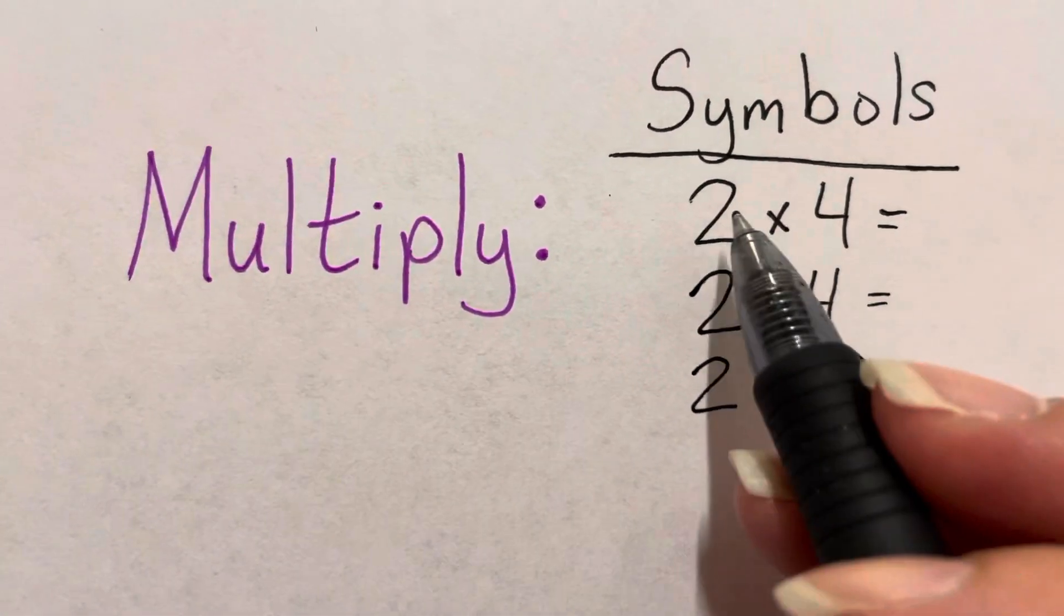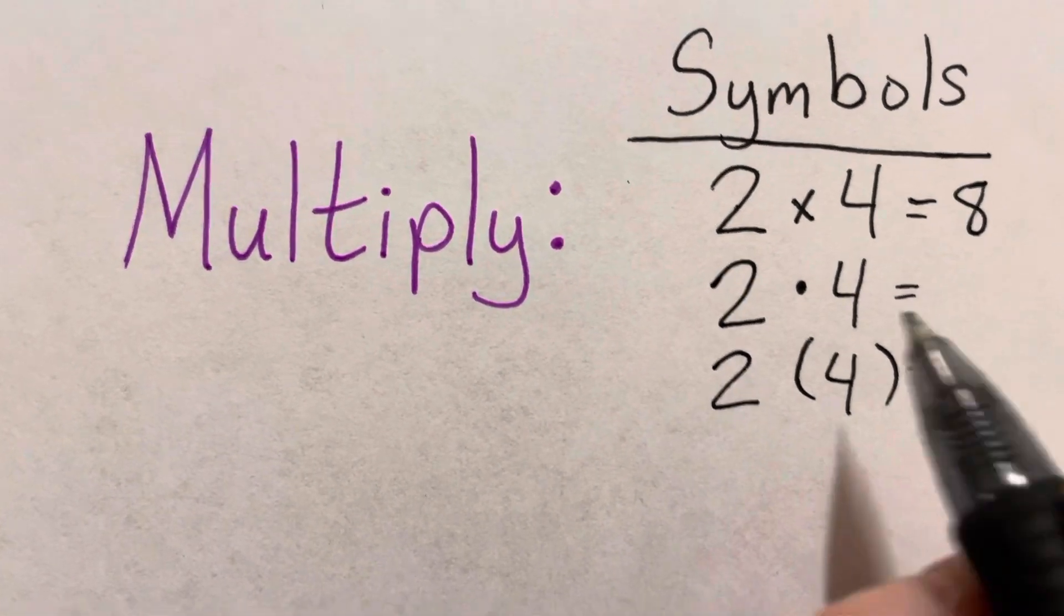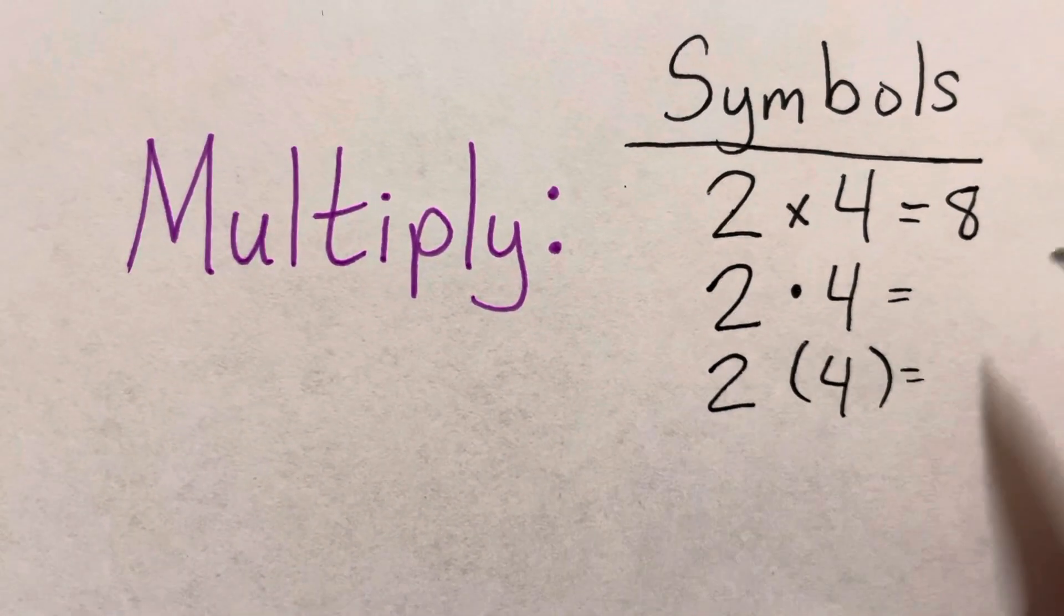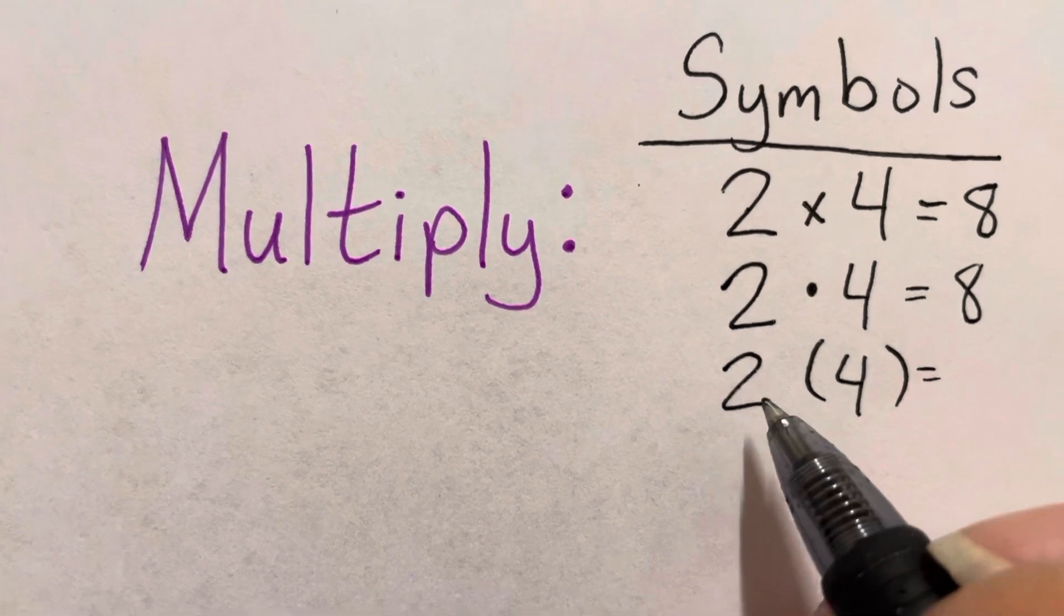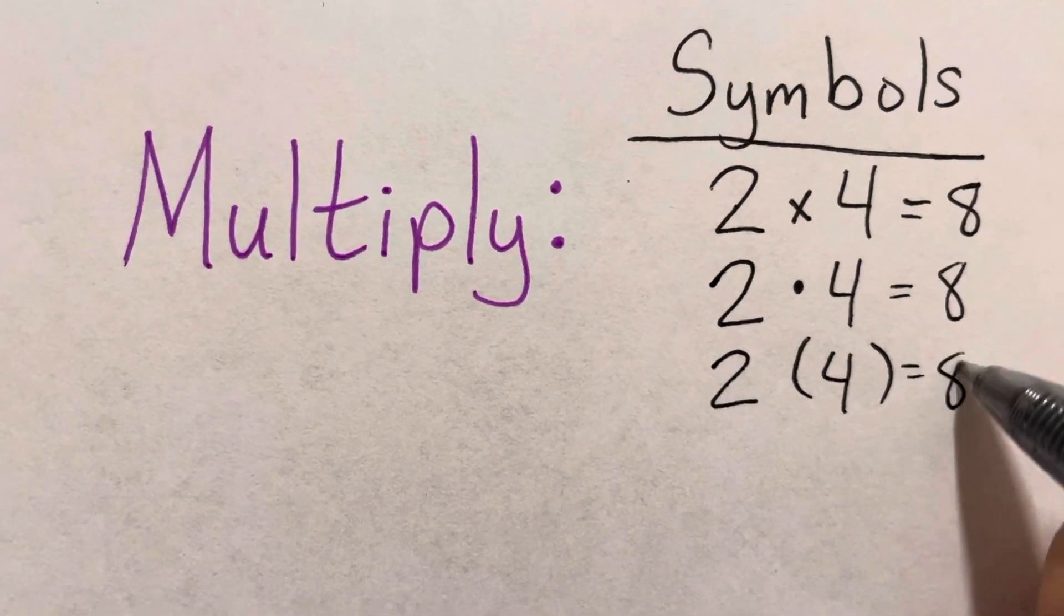So, for example, 2 times 4 is 8. 2 times 4 equals 8.